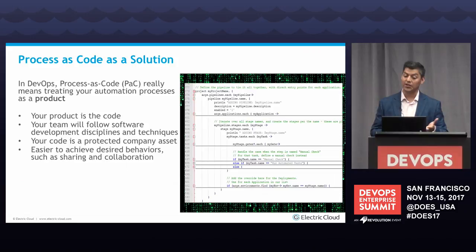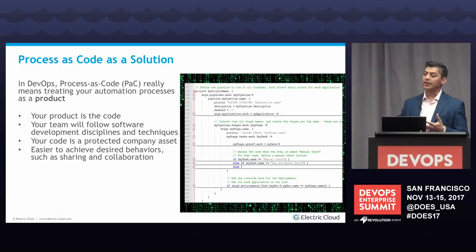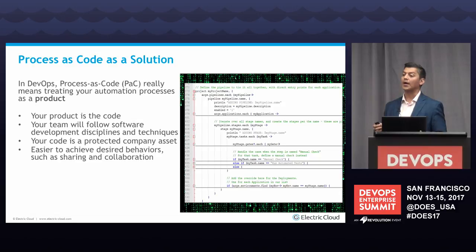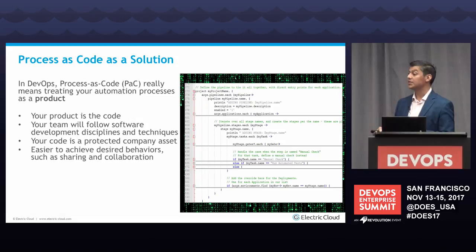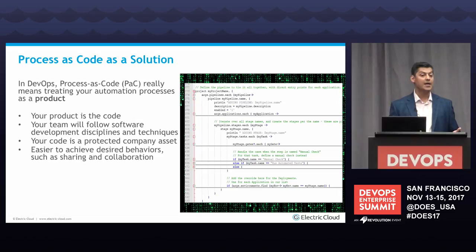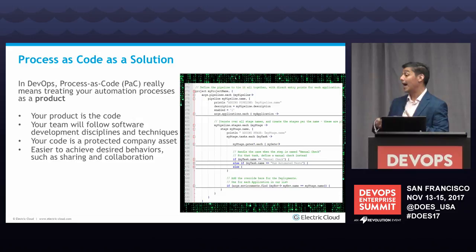A solution I see is process as code. One of the things I wanted to codify: with process as code, think about your work as a product. It's no longer something you're doing on the side in the UX — now you're responsible for delivering this product, and that product is your process. When you start treating it as code, you should consider applying your company's software development techniques. If you have code reviews or whatever, use that for your process code. It is a company asset — it's going to be in version control, protected by whatever policies are in place.